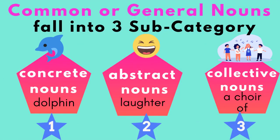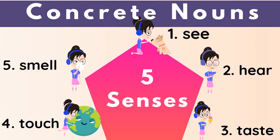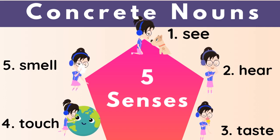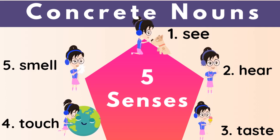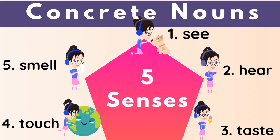Common or general nouns fall into three subcategories: concrete nouns, abstract nouns, collective nouns. Concrete is anything you can see. Abstract you cannot see, like laughter. Collective is like a choir of children. Concrete nouns are things that you can see, hear, taste, touch, and smell — use all your five senses.